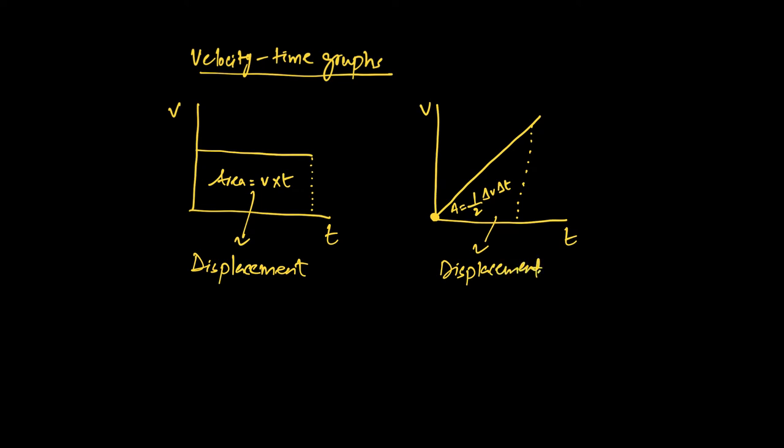So this guy right here, this one is the constant velocity kind of graph. This is a body where the velocity is increasing at a constant rate. So this is constant velocity and this is constant acceleration.